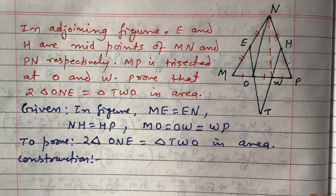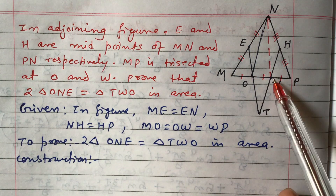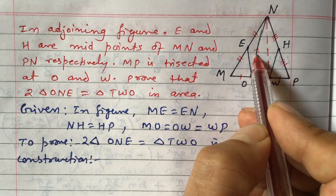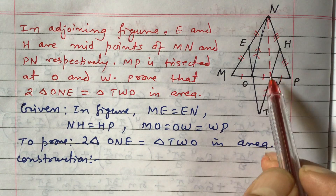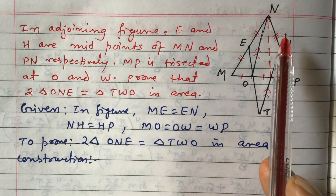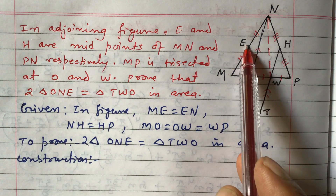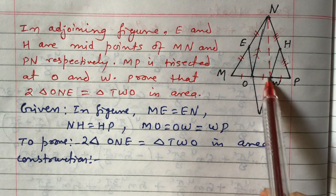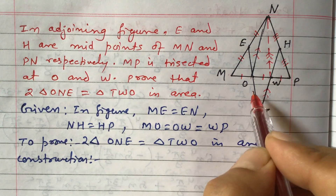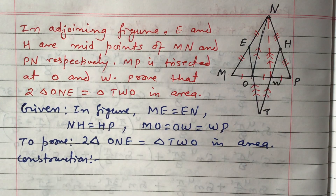After joining N and W, observe that in triangle MNW, E and O are midpoints of two sides, so the line EO is parallel to NW by the midpoint theorem. Similarly, in triangle ONP, H and W are midpoints, so HW is parallel to NO. This means two pairs of opposite sides are parallel, forming a parallelogram.